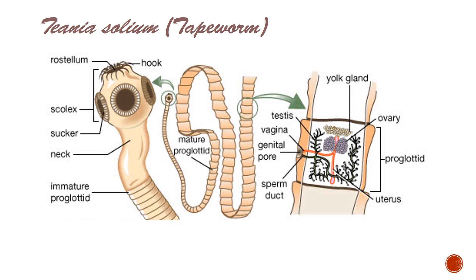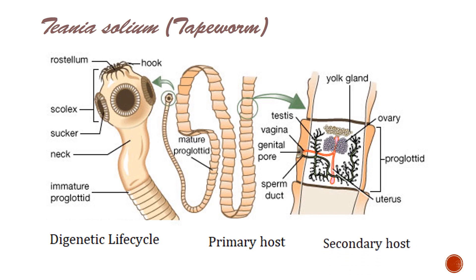Taenia solium has a digenetic life cycle, which means two hosts are required to complete its life cycle. In the case of Taenia solium, one host is human, which acts as the primary host — the host in which Taenia solium has its reproductive phase and spends most of its life cycle. The secondary host is pig, in which some of the larval stages of this organism occur.